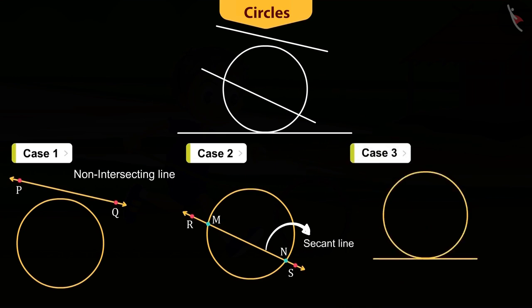In the third case, the line, say UV, intersects the circle at only one point. In this case, UV is called the tangent of the circle, and the point common to the line and the circle is called the point of contact.